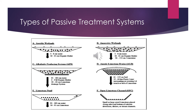The types of passive treatment systems include: aerobic wetlands, anaerobic wetlands, alkalinity producing systems (also known as APS), anoxic limestone drains (also known as ALD), limestone ponds, and open limestone channels (abbreviated as OLC).